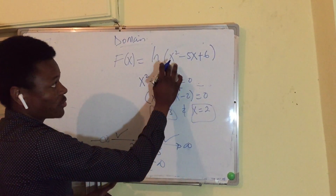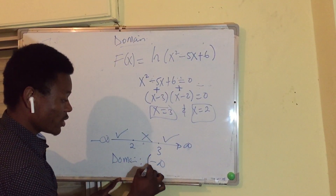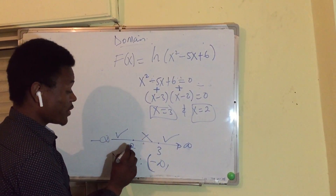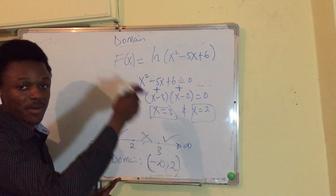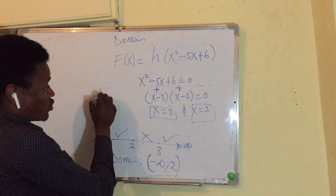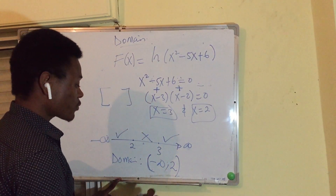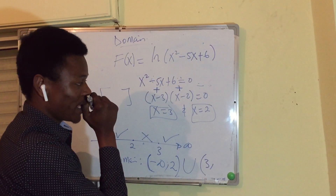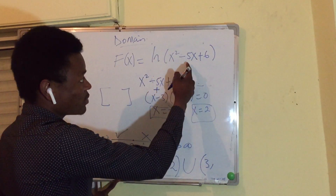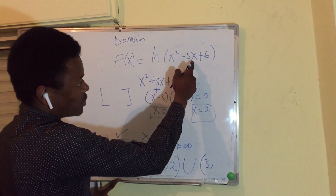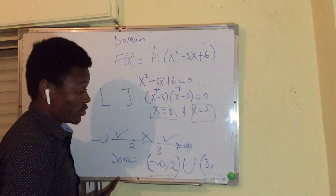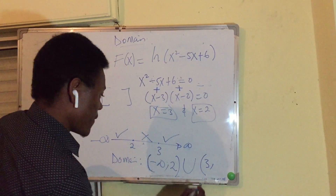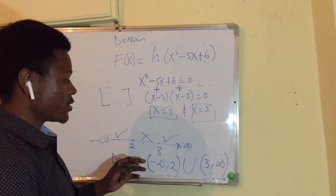The domain is from negative infinity to 2 (open/parenthesis bracket), union with the interval from 3 to positive infinity. So the domain is (-∞, 2) ∪ (3, +∞). This is the domain of this function.